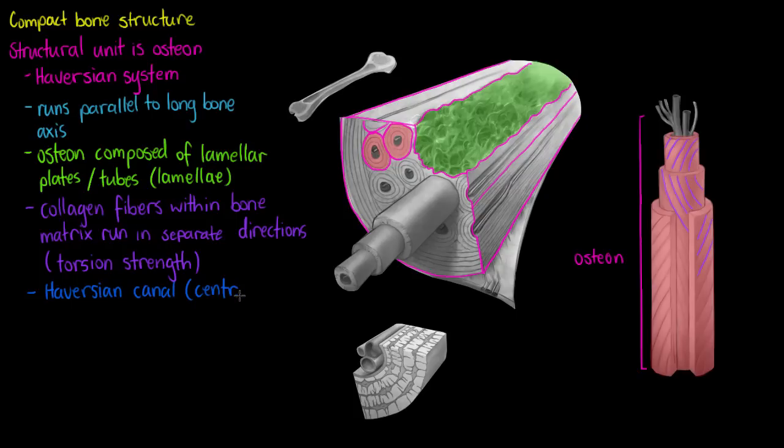And the next part of the osteon that we're going to look at is our Haversian canal, or the central canal. And this is why we sometimes call the osteon the Haversian system. And the Haversian canal is at the center of each osteon. I'm just going to outline a couple. So we can see it here. This is a central canal, or a Haversian canal here. And a couple here as well.